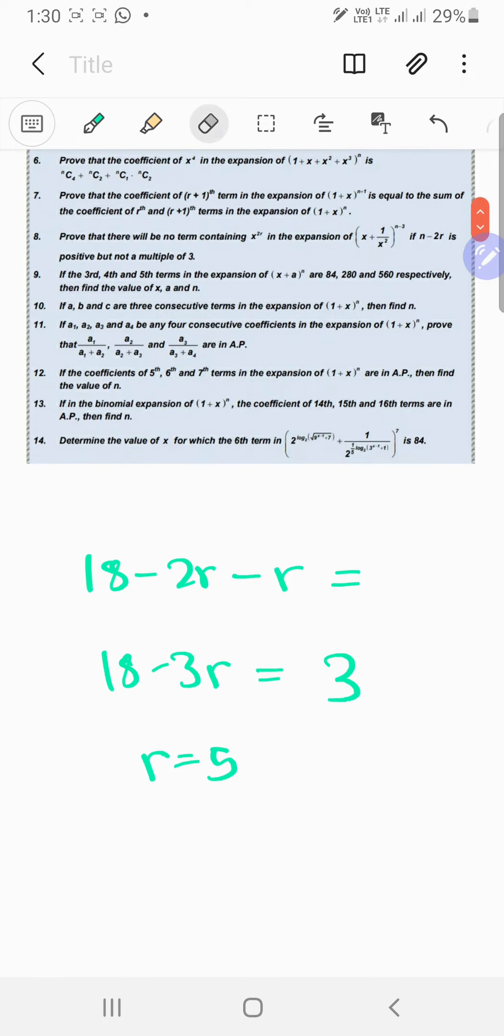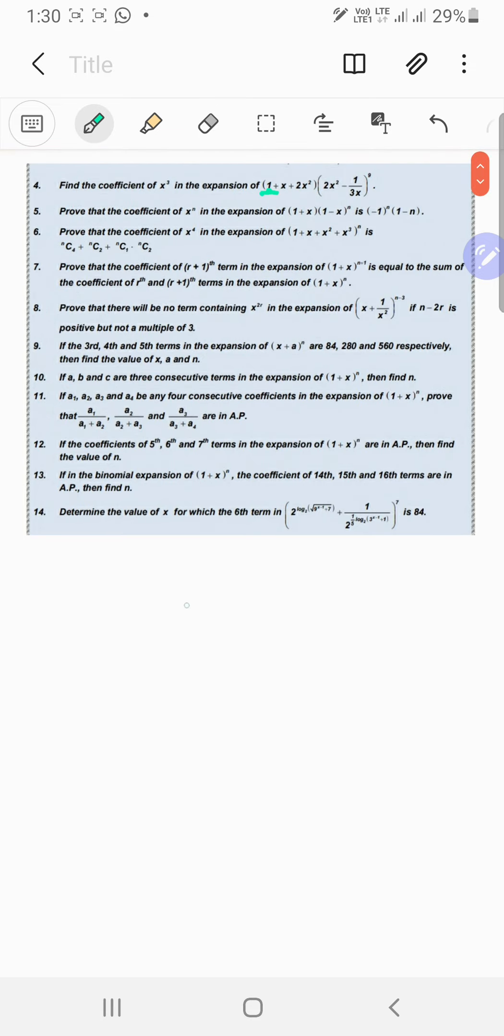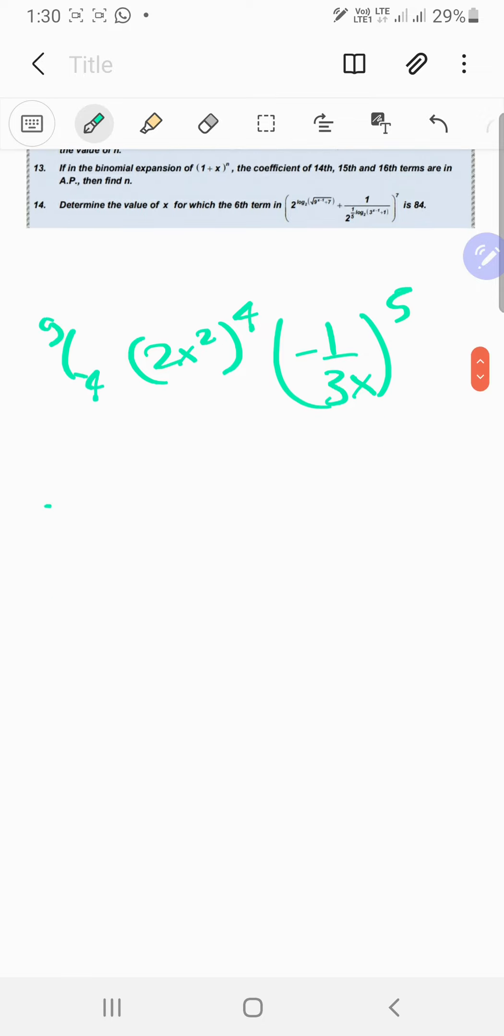So let's just deal with this, we want r equals 5. So that's going to be like 2x squared and then 9 minus 5 is 4, minus 1 upon 3x raised to the 5th power, and you got 9 choose 5, which is the same thing as 9 choose 4. Now starts the big calculation stuff.